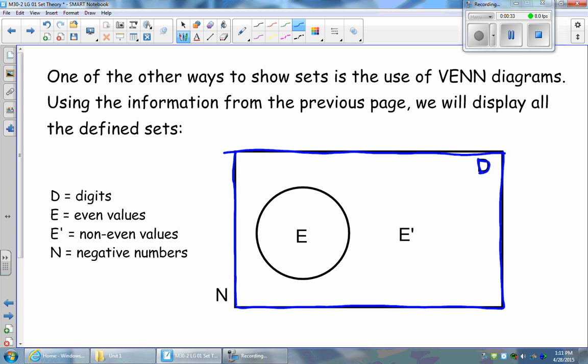Then within our large rectangle, we have our subsets. So E is a subset of D. All those even digits fall within the large rectangle because all of our even digits fall within the universal set of digits.